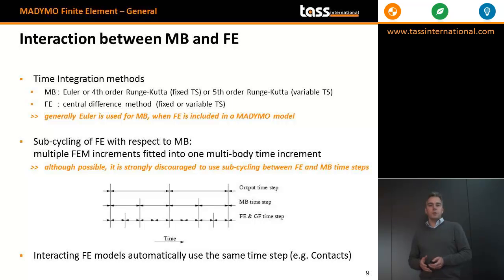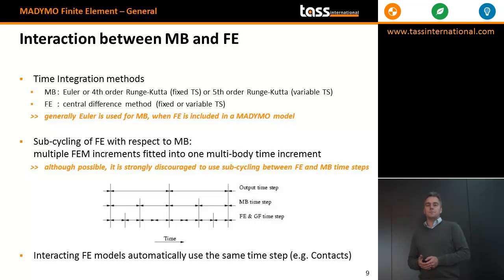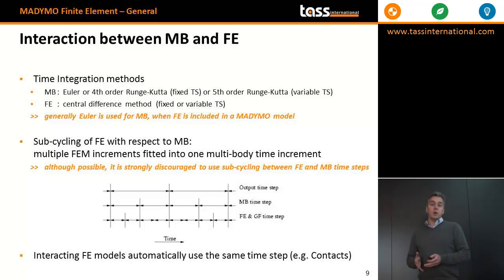When modeling with both multibody and finite element, we are dealing with two integration methods and two integration time steps. For multibody, we have the Euler method, but also options for Runge-Kutta integration methods. For finite element, the central difference method is used. All of these are explicit integration methods. When combining FE and multibody in the same model, we normally use an Euler integration method for the multibody system.